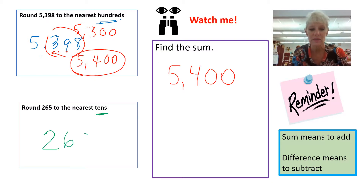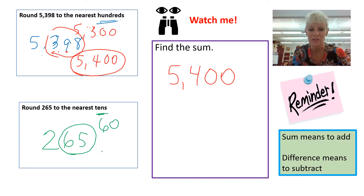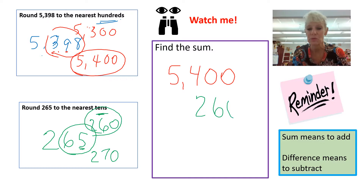The next one says to round to the tens. I have 265, and my tens place is right here. I'm actually looking at the 65 and asking myself: is this closer to 60 or is it closer to 70? The 5 tells me that I need to bump up, which means I am closer to 270. Remember how important it is to put that number directly in the right place.